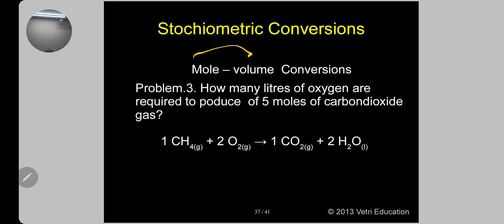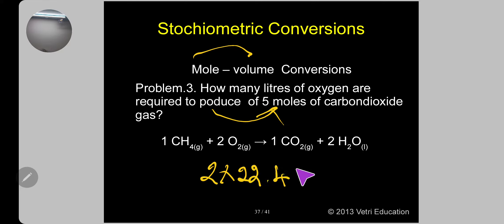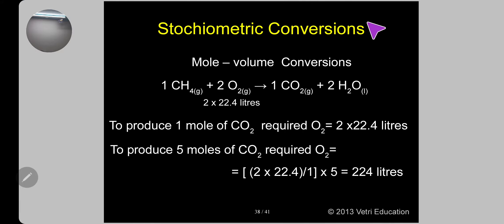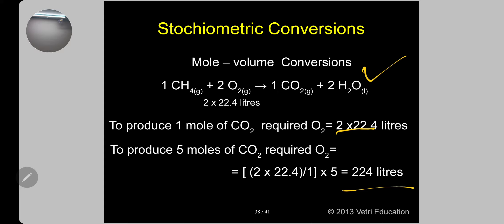Mole-volume conversion: how many liters of oxygen are required to produce 5 moles of CO₂? To produce 1 mole of CO₂, required oxygen = 2 × 22.4 liters = 44.8 liters. To produce 5 moles of CO₂, required oxygen = 2 × 22.4 ÷ 1 × 5 = 224 liters of oxygen.